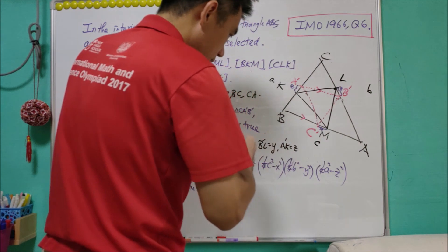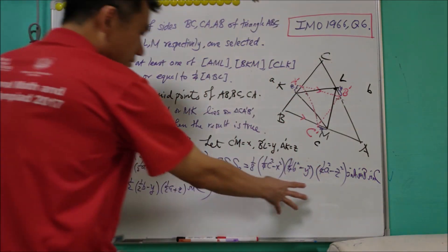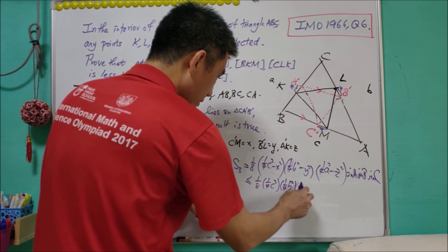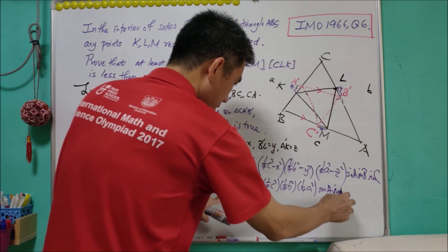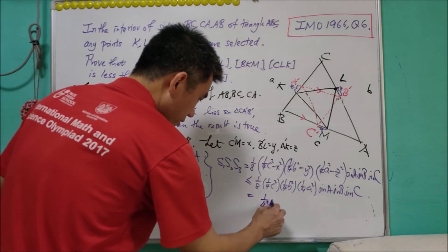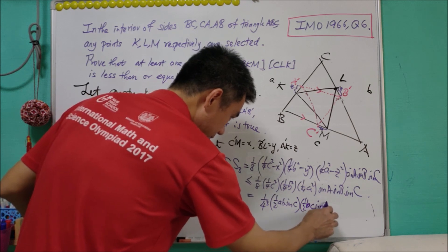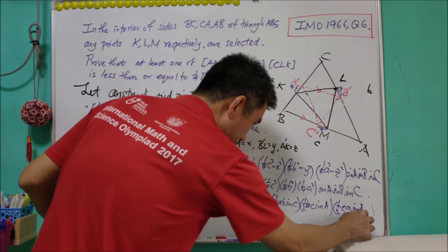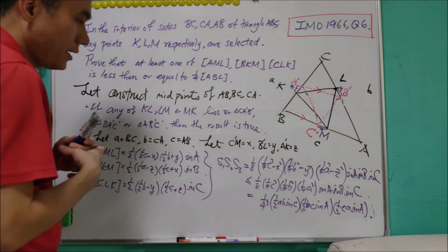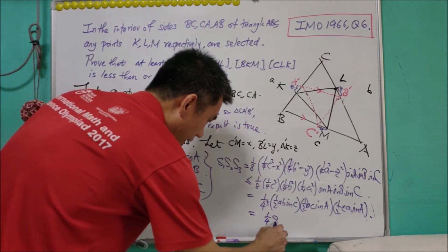This is definitely less than or equal to one-eighth times (1/4)c² times (1/4)b² times (1/4)a² times sine A times sine B times sine C. This equals (1/4)³ times (1/2 ab sin C) times (1/2 bc sin A) times (1/2 ca sin B). Each of these factors is exactly the area of triangle ABC, which we call S. So this equals (1/4)³ times S³, or one-quarter times S cubed.